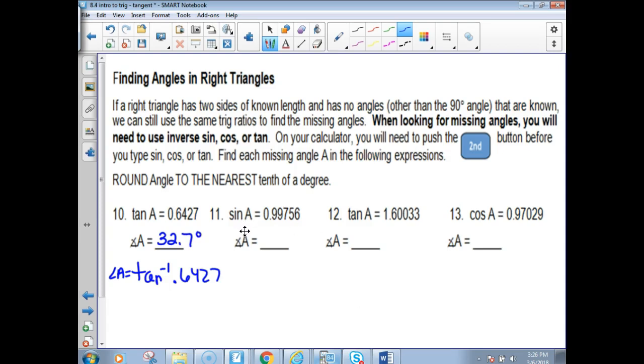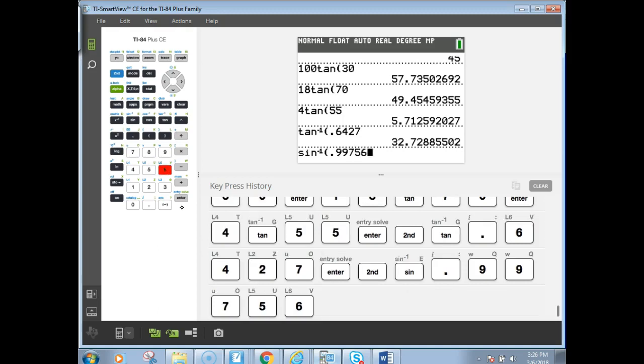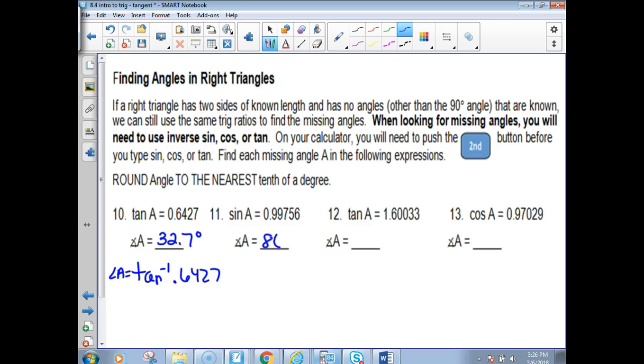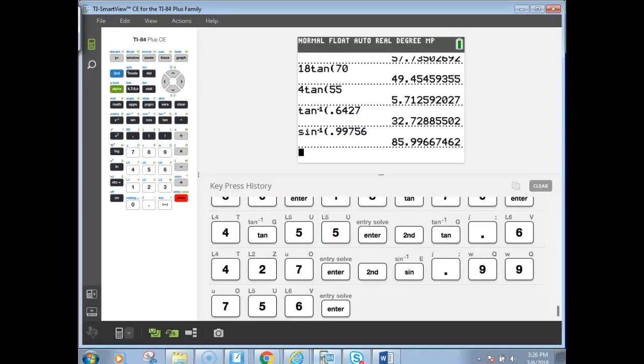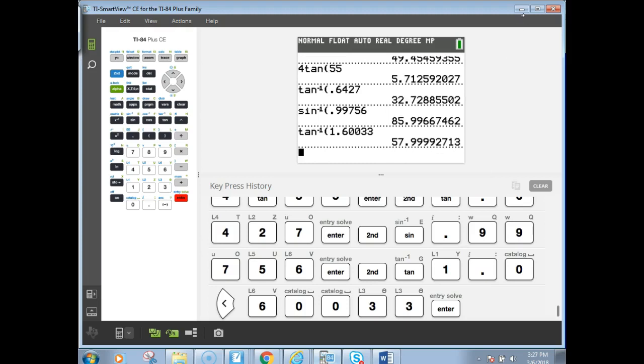Now, we have not learned about the sine and the cosine, but we will be in a couple of days. The sine, if you're finding an angle measure, though, you do it the same way. You just hit second. This time, hit the sine button. And put in the decimal, which I forgot to read what it was. Is it 0.99756? Thank you. And that's 85.996. We'd have to round that to 86 degrees. These need to have degrees on them because we're talking about angles now. And for the next one, we're going to hit second tangent. 1.60033. 57.999, and that would be 58 degrees. And the last one, second cosine. 0.97. And I got 13.8, so that would be 13.9 if you rounded to the tenth.